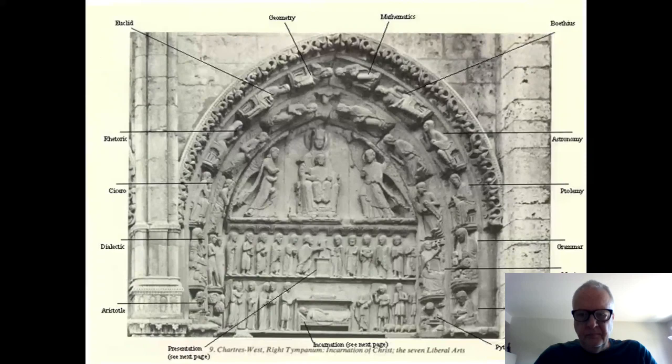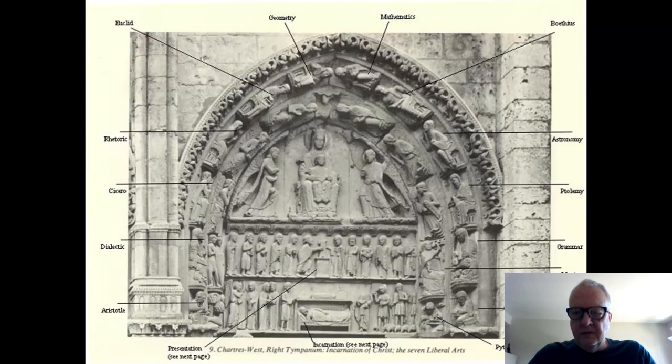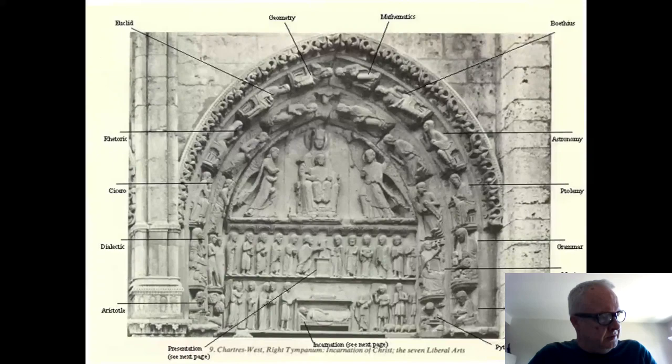The education of scholasticism is the seven liberal arts. The writing of scholasticism is the Summa — meaning summary. The most famous is the Summa Theologica of Thomas Aquinas. Summas had intricate subdivisions, chapters, and sub-chapters that didn't exist in classical writing. There is a theory that there may be a correspondence between the subdivisions and details of Gothic architecture and the subdivisions of the scholastic Summa — proposed notably by art historian Erwin Panofsky in Gothic Architecture and Scholasticism.